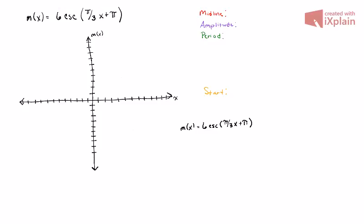One of the first things that we want to do is factor out the inside of what's happening in the cosecant. Our goal is to get x to have a coefficient of one. That means I have to factor out pi thirds from both terms. If I remove pi thirds from pi thirds x, I'm just left with x. If I factor out pi thirds from pi, that leaves me with 3.